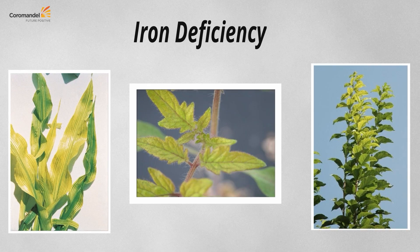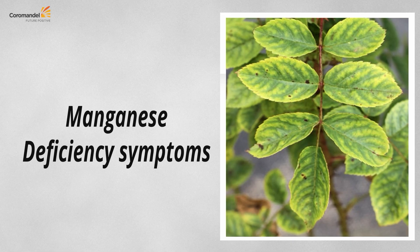Iron is important not only for human hemoglobin formation but also for plants. Being variably mobile, deficiency can appear at the top or middle of the plant as strong yellowing or bleaching of leaves. Bleaching in sugarcane and citrus is very prominent as iron deficiency. Deficiency is shown for maize and tomato crops where yellowing of the top leaves appears.